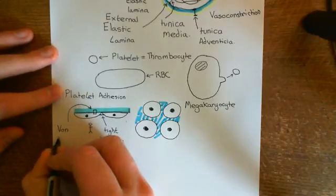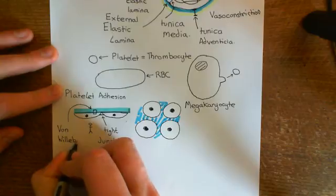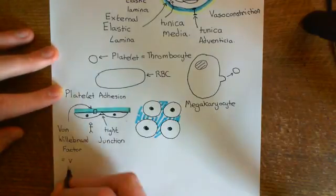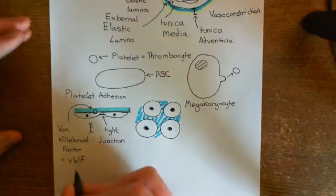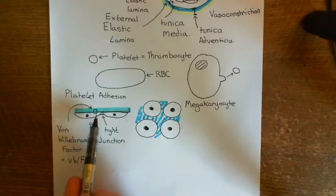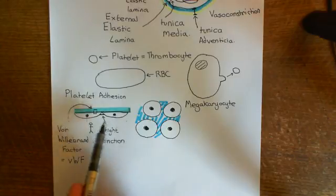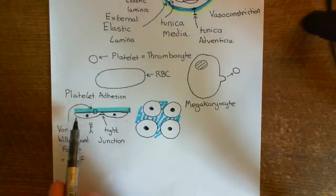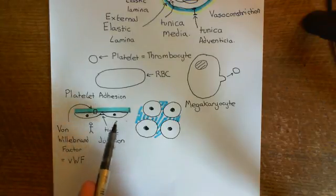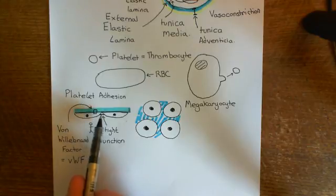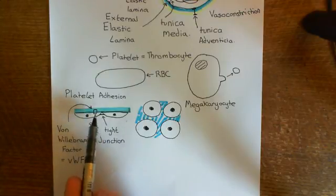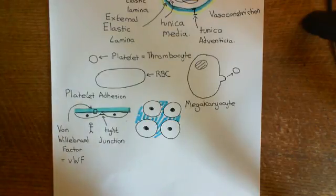This protein is known as von Willebrand factor, often abbreviated to vWF. Von Willebrand factor is usually abbreviated with lowercase v, capital W, and capital F. We have this protein, von Willebrand factor, in the basolateral membrane of all of our endothelial cells. It is not usually visible to the contents of the blood, because the contents of the blood cannot get past these tight junctions, so it can only see what's in the apical membrane, not the basolateral membrane. Therefore, the platelets in the blood do not see von Willebrand factor.